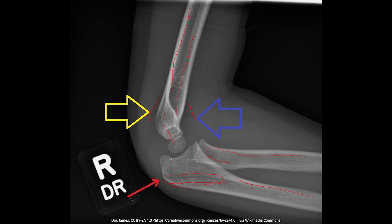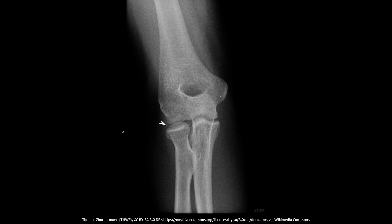We then assess the joints in step two: the radio-humeral joint articulation between the radial head and humerus, and the articulation between the trochlear notch and trochlea. We draw the radio-capitellar line from the radial neck — it intersects the capitellum normally. We draw the anterior humeral line, which intersects the middle third of the capitellum. In soft tissue assessment, we find elevation of the elbow fat pads.